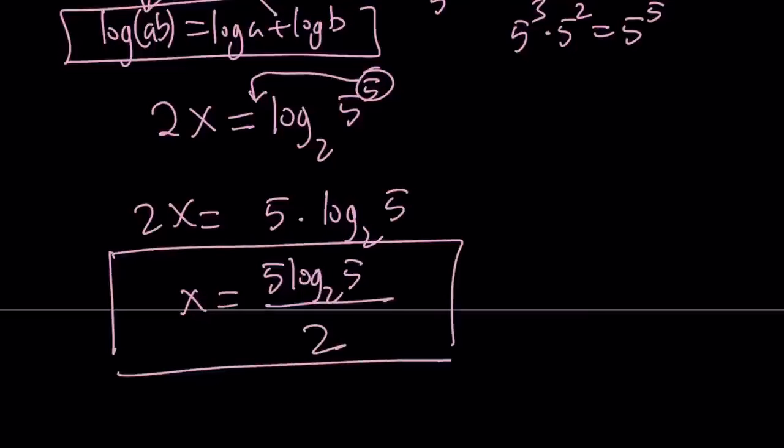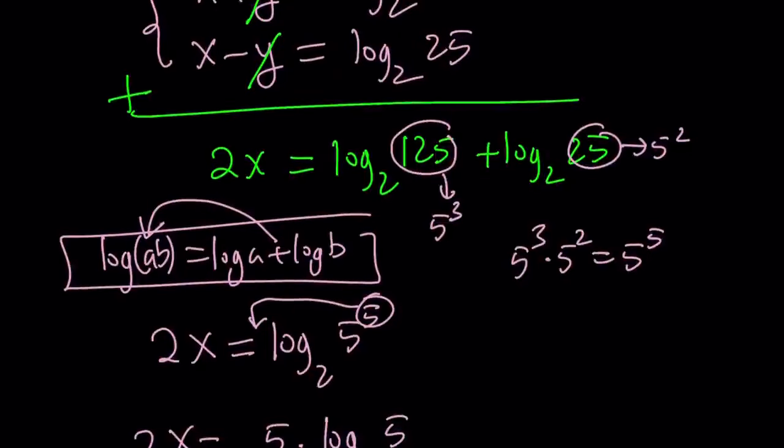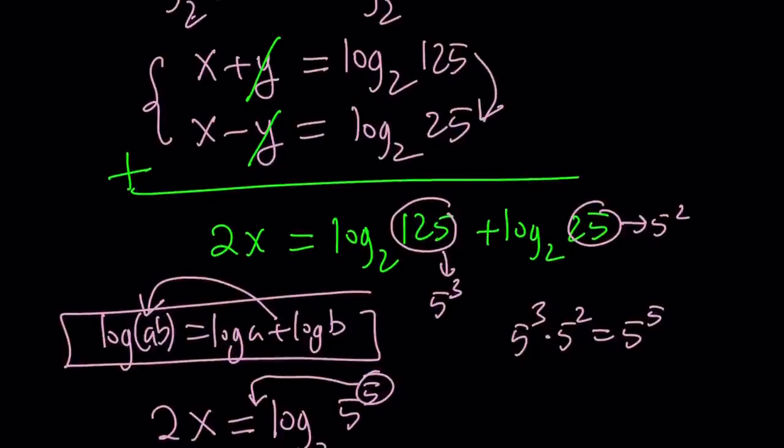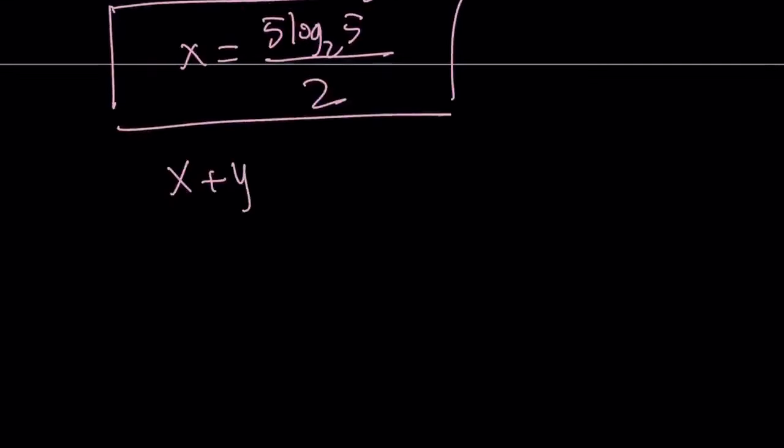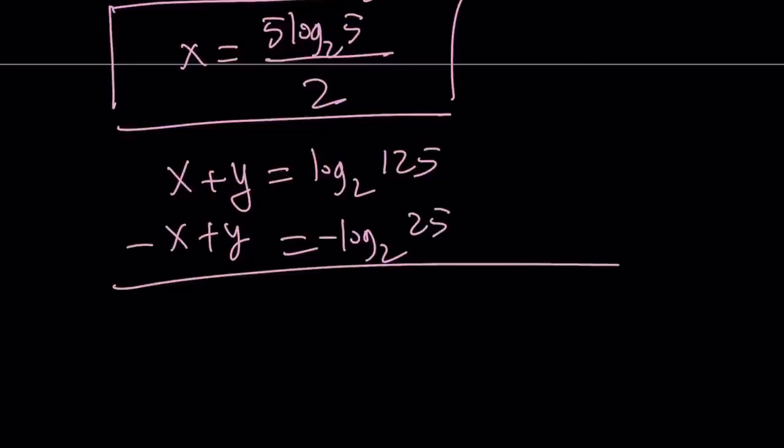I can find the y value by substitution, but you definitely could. I would subtract the equations. Because notice that if you subtract, x is going to cancel out. Let's rewrite our expression. I had x plus y and x minus y. You're negating the second equation and adding, right? That's equivalent to subtracting. This gives you 2y equals log 125 minus log 25.